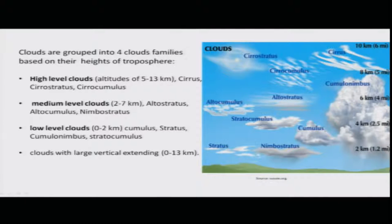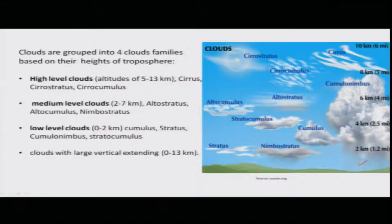As you can see from this picture, the entire atmosphere is about 10 to 11 kilometers from the earth's surface — from sea level. The clouds are classified depending upon their height from the surface.